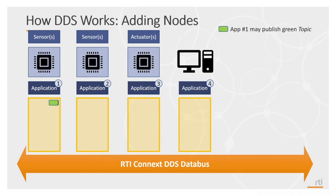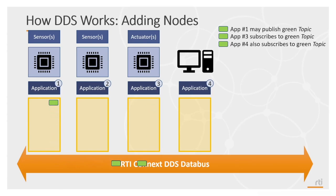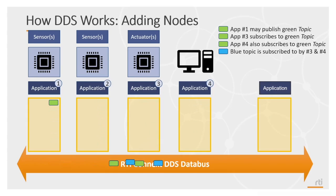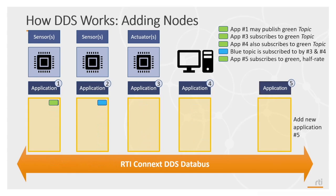Now let's take a look at how DDS works. All of these nodes are existing on the system, and after discovery, application 1 begins sending data to application 3 and application 4. Application 2 also sends data to application 3 and application 4. Then a new application comes into the system, begins subscribing to some of the original data, and provides its own data back to the rest of the system.